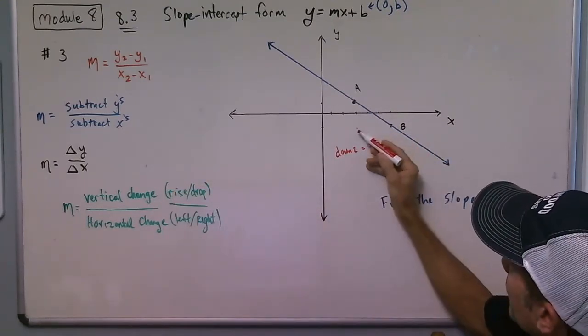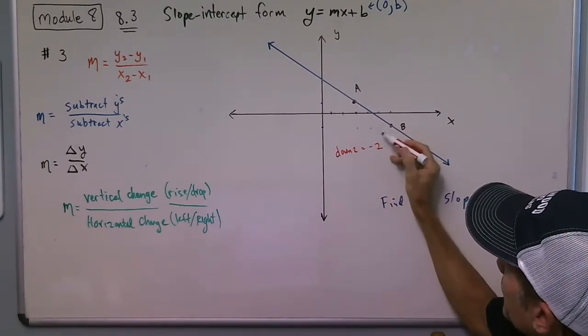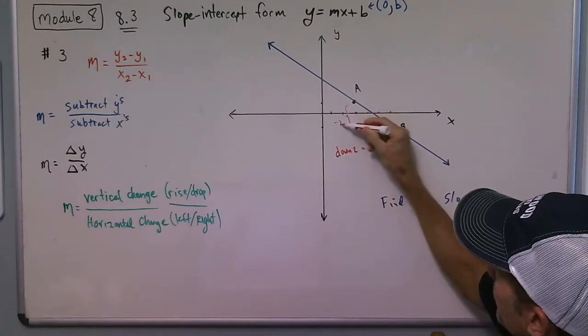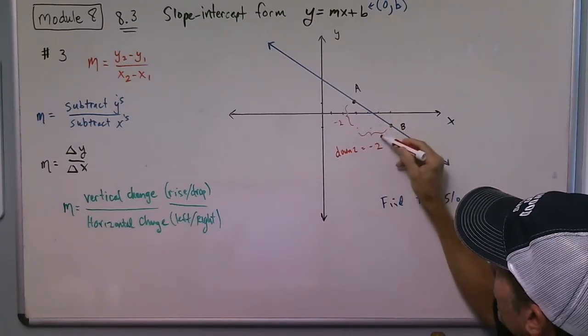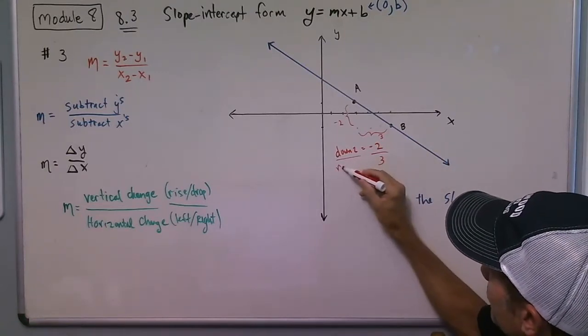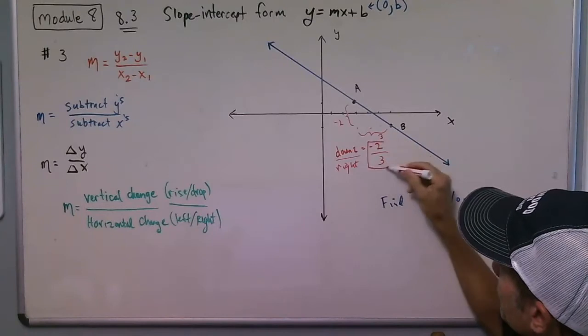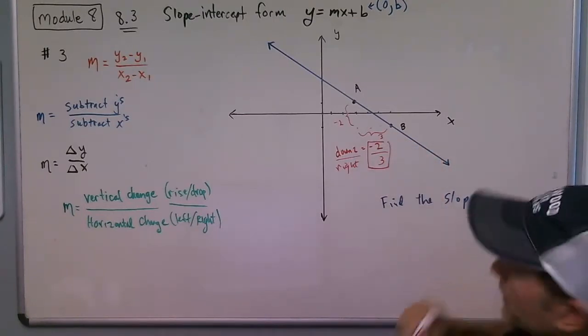And then from there I go over 1, 2, 3. So I went down 2 over 3, so that was right 3. And what I got is negative 2 thirds. That's the slope.